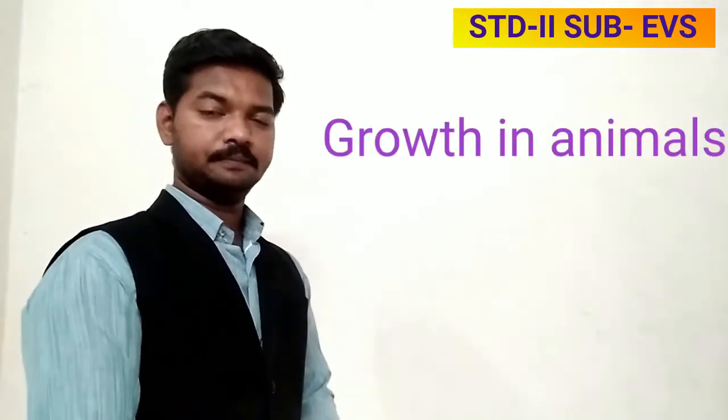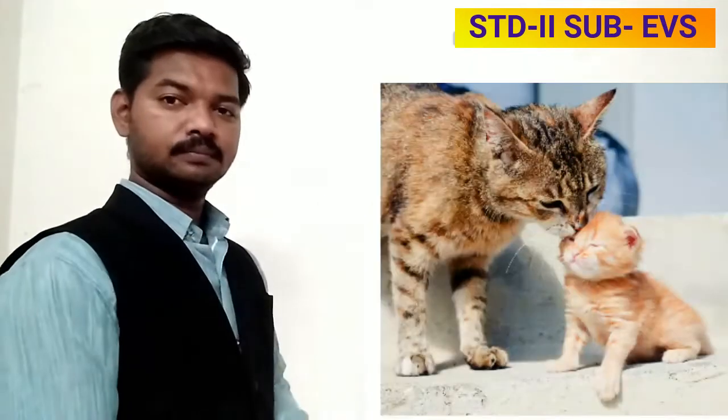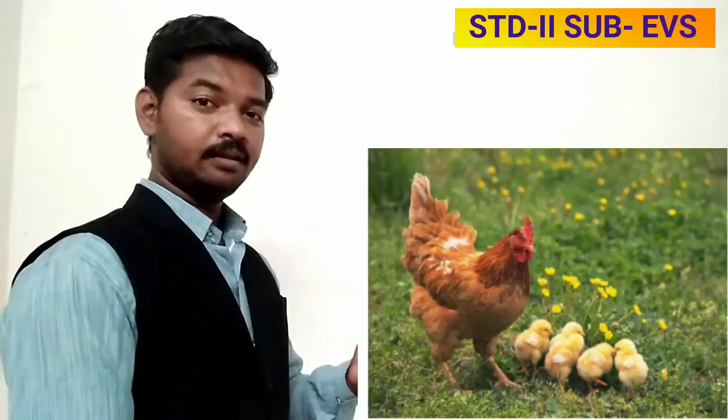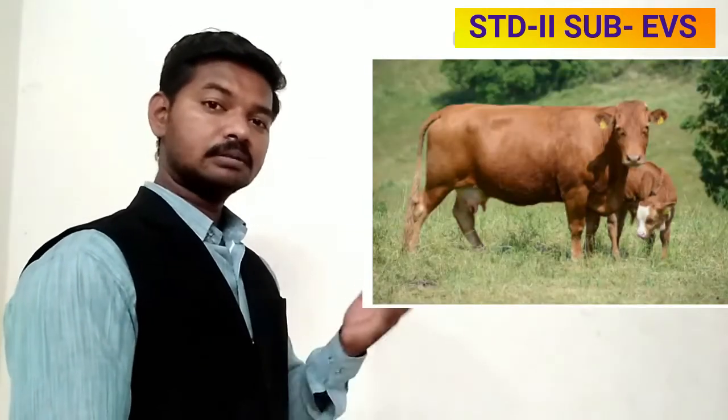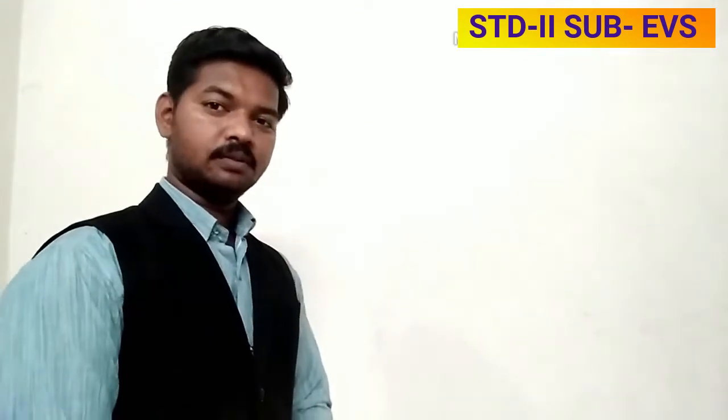As we know, plants are also living things, so plants also grow — they become taller and bigger. Now, growth in animals: the young of animals grow into big animals. A kitten grows into a cat, a puppy grows into a dog, a chick becomes a hen, and a calf becomes a cow.